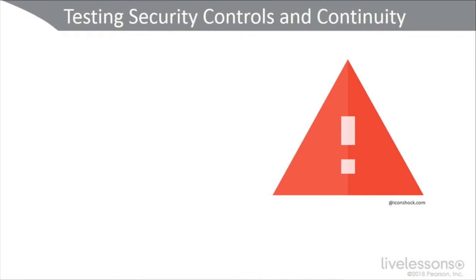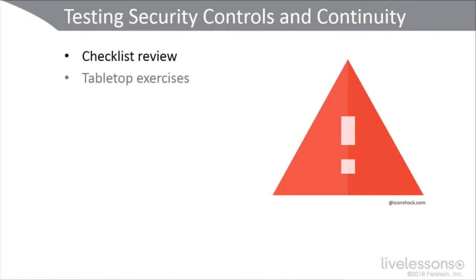Let's look at some testing of security controls, and realize that these tests can also be applied to disaster recovery scenarios. Let's start with the checklist review — a preliminary to the real test where you distribute checklists to all team members or control stakeholders, then go through it and get feedback and reporting. There are also tabletop exercises, typically used for disaster recovery and business continuity, but also applicable for security controls, services, and app testing.